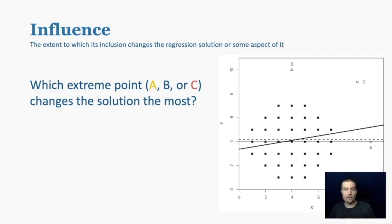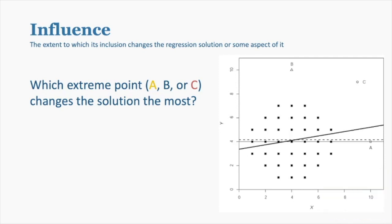The last one, and I'm going to hide myself for a sec, is called influence. This one is the extent to which the inclusion of that data point changes the regression solution or some aspect of it. So I want you to consider this example I have over here, where we have x and y, we have a cloud of points, but then we also have these other points that are marked out here, and they're all extreme, they're outliers. But we want to consider which one has high influence.